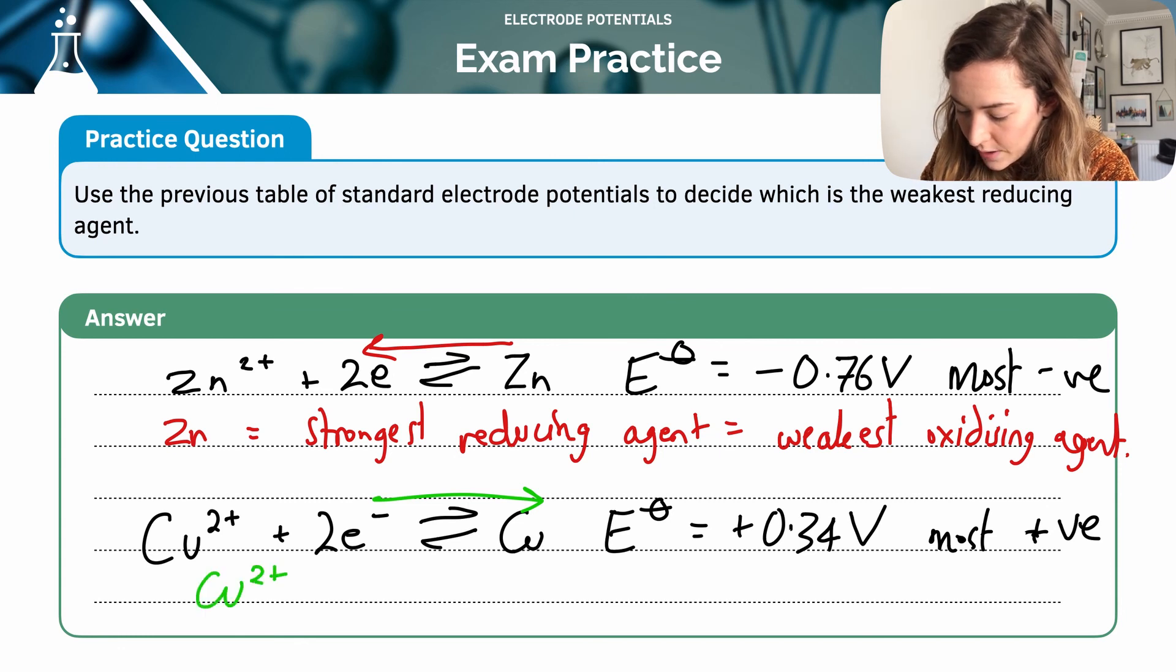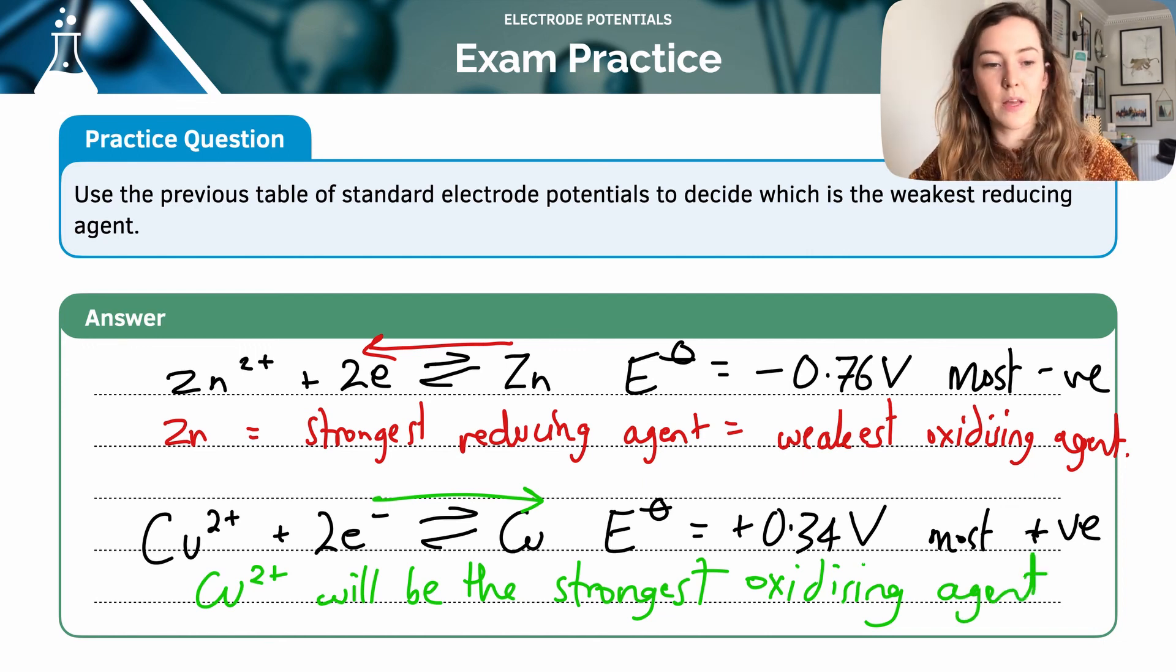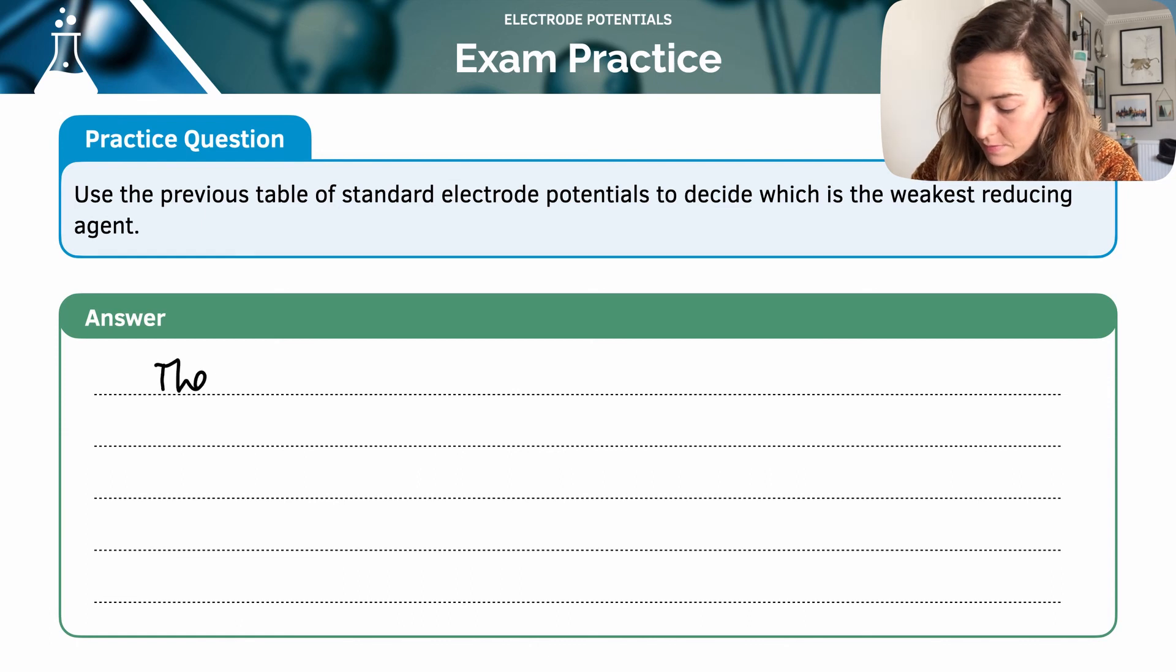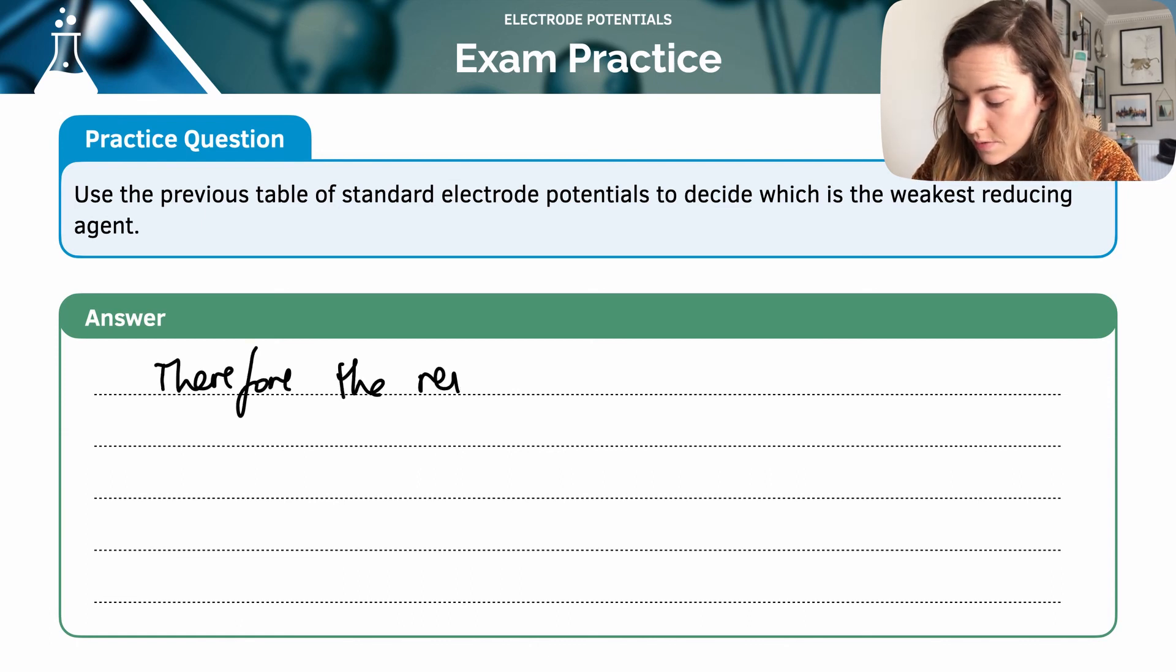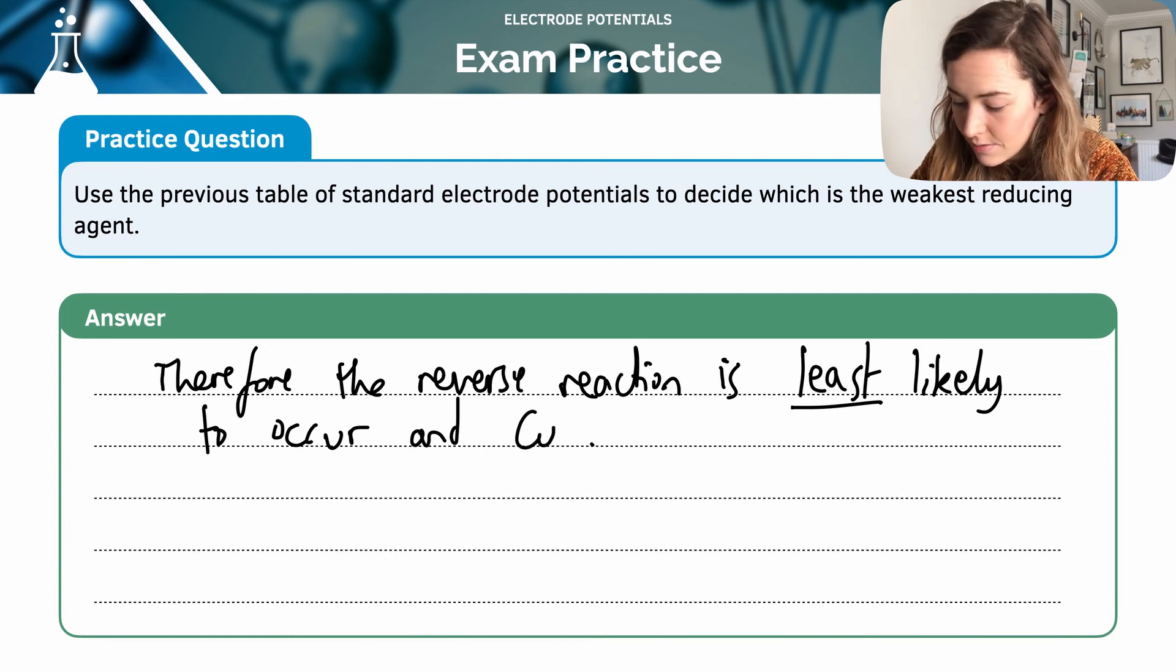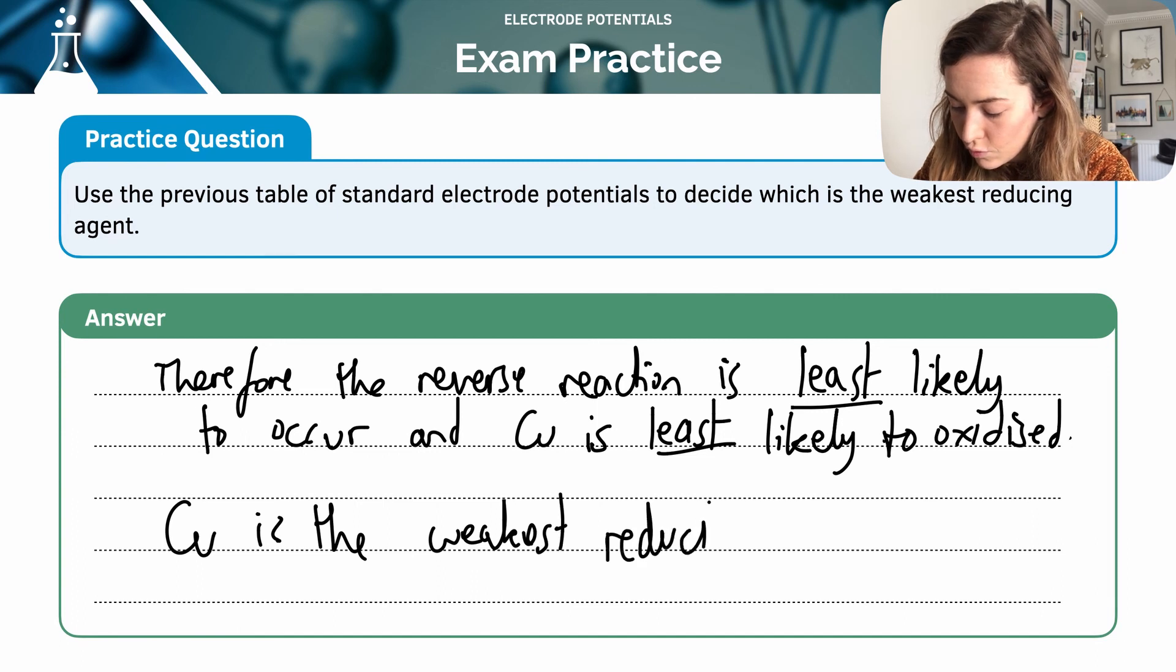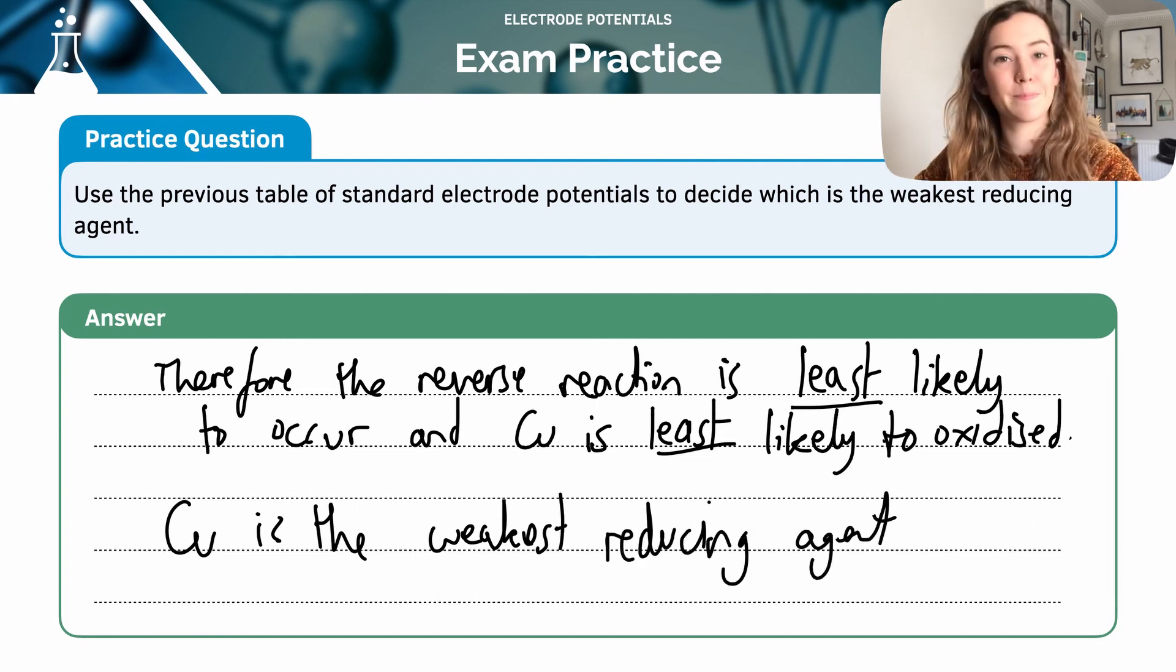So let's keep going. Therefore, what we can say here, the reverse reaction is least likely to occur in that second reaction I showed you with the copper, and copper is least likely to be oxidized. So that means that copper is the weakest reducing agent.